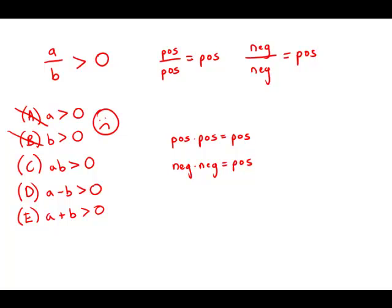Very briefly scanning the other answers, if we add or subtract them, well again if we don't know whether they're positive or negative, adding and subtracting them we have no idea whether those will be positive or negative. So D and E do not work and the answer is C.